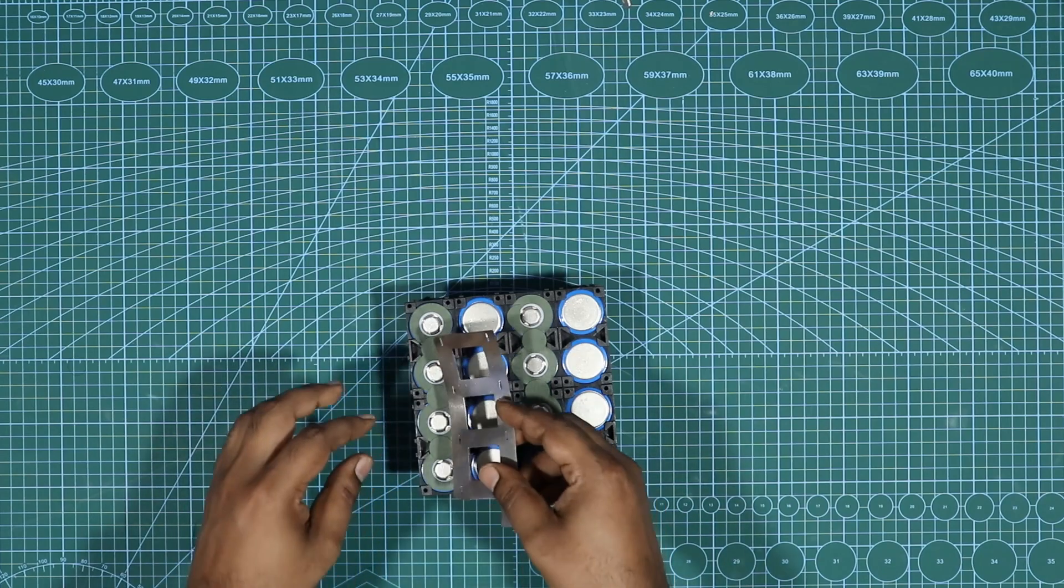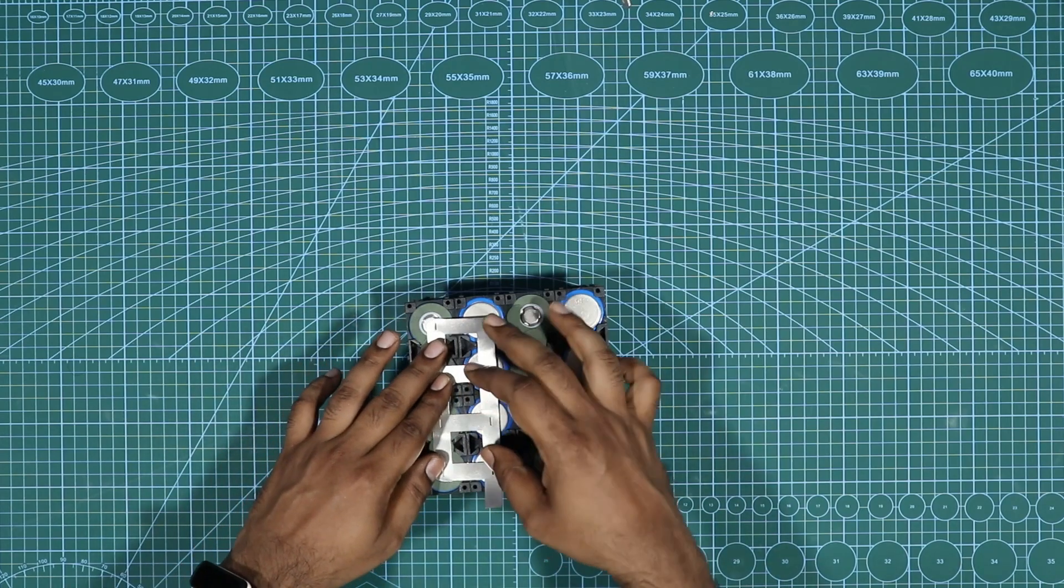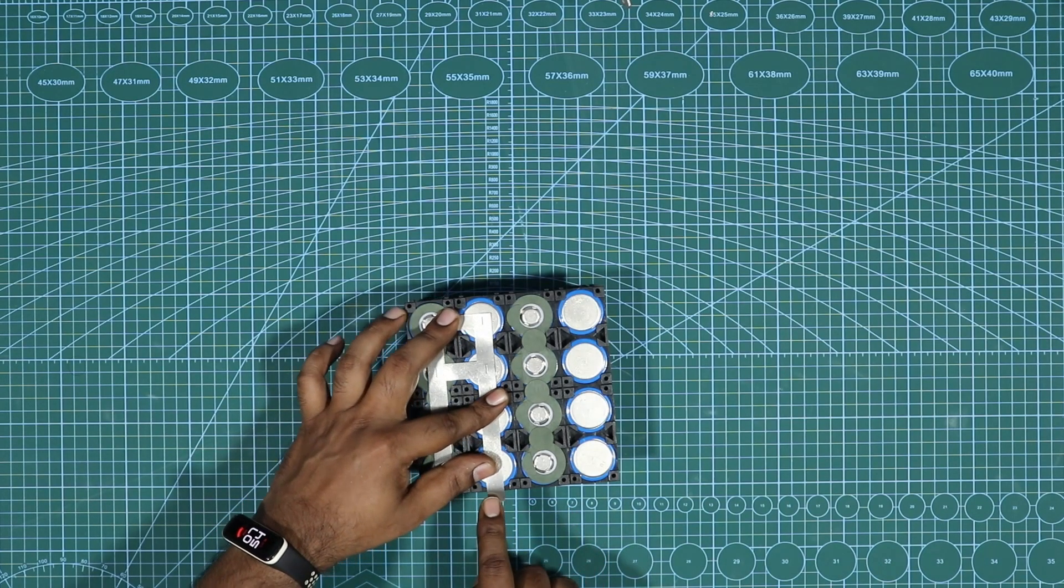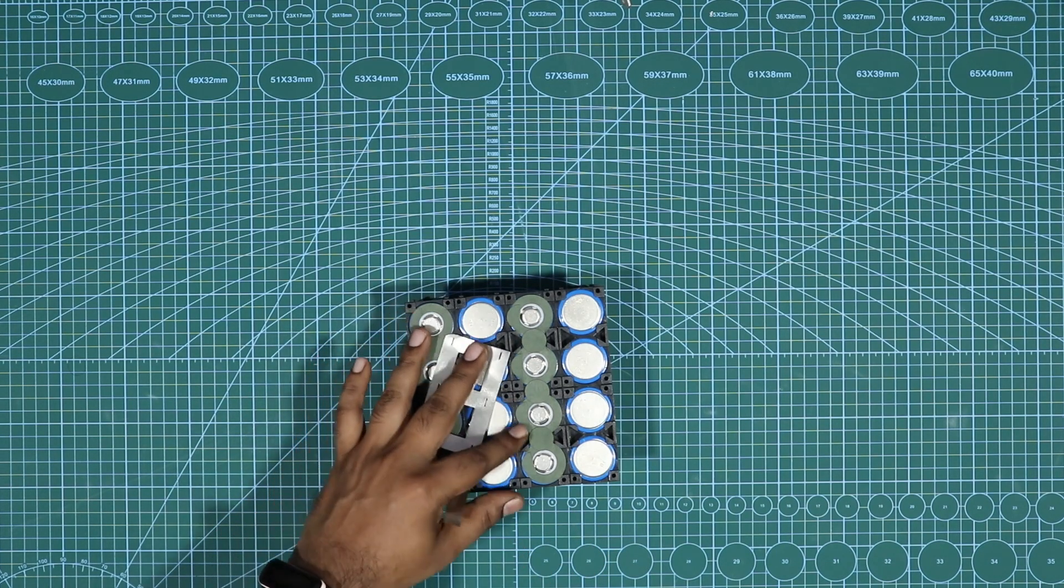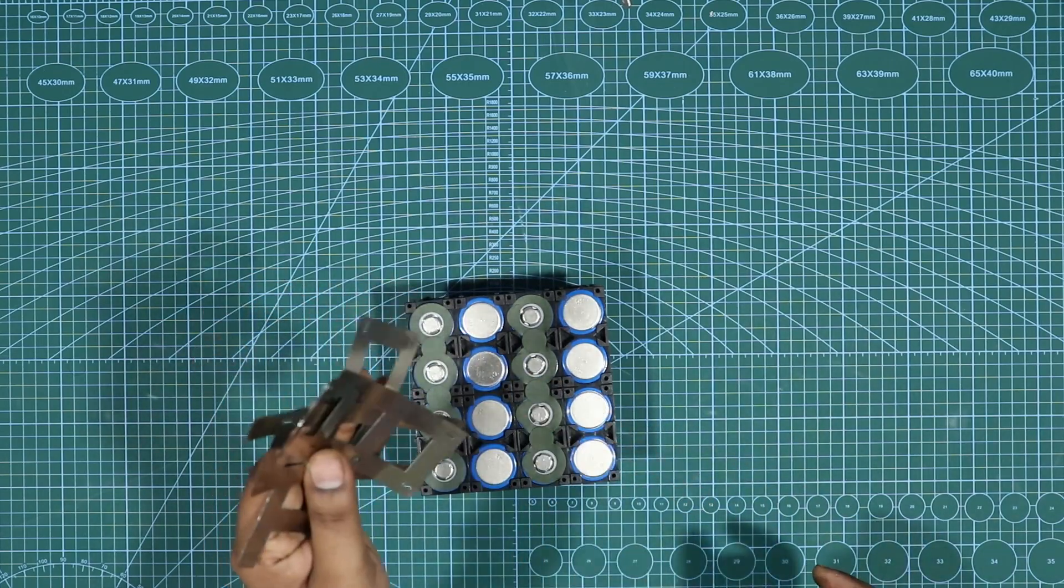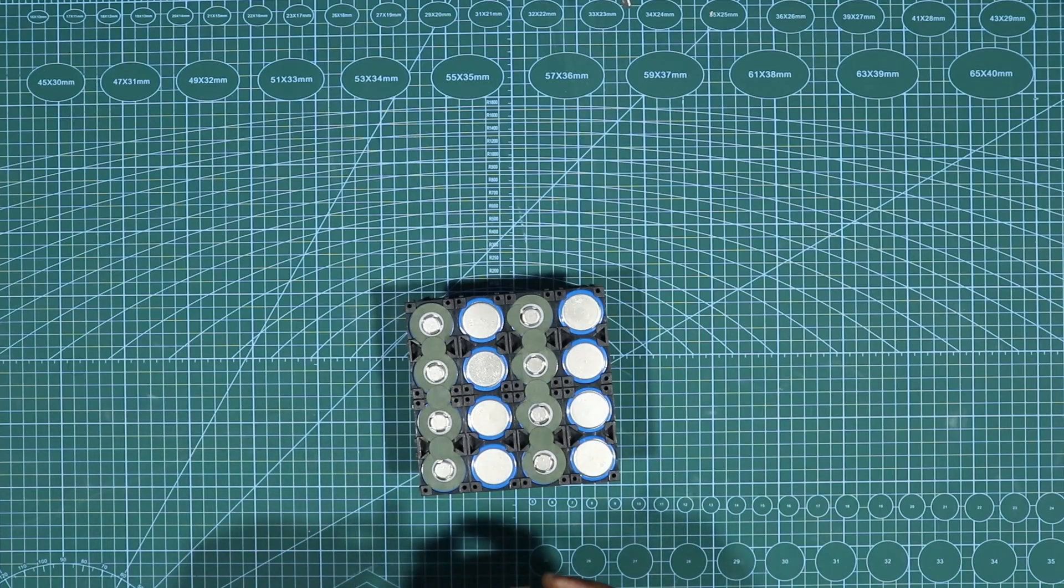And I'm going to be using these nickel strips to spot weld it. And I did leave a little extra at the end so that I could connect a balance cable on it. So I have nickel strips like these. You need three because you're making a 4s battery pack.